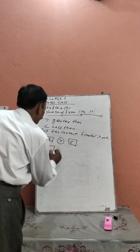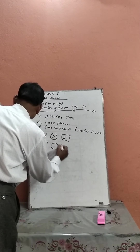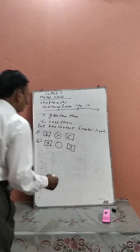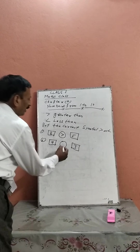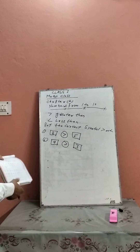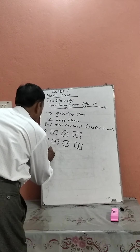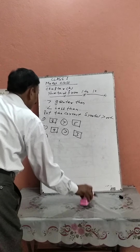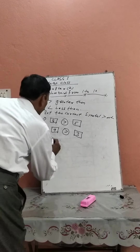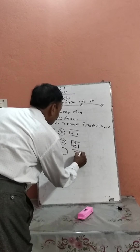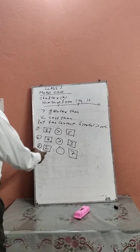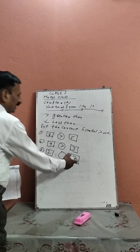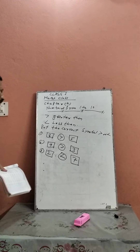Next portion: 9 dash 3 — here we see that 9 is greater than 3 and we put the symbol greater than. Next, 2 dash 7 — we see that 2 is less than 7 and we put the symbol less than.